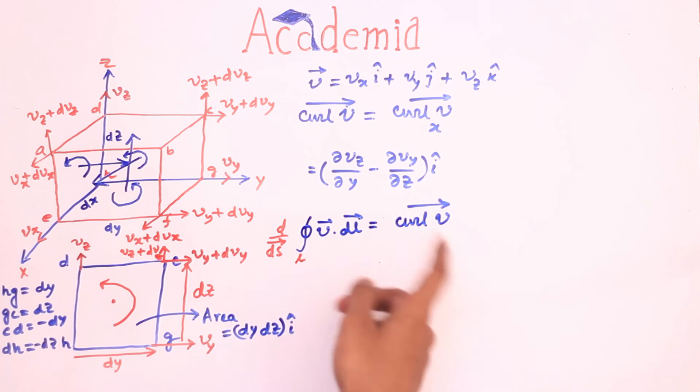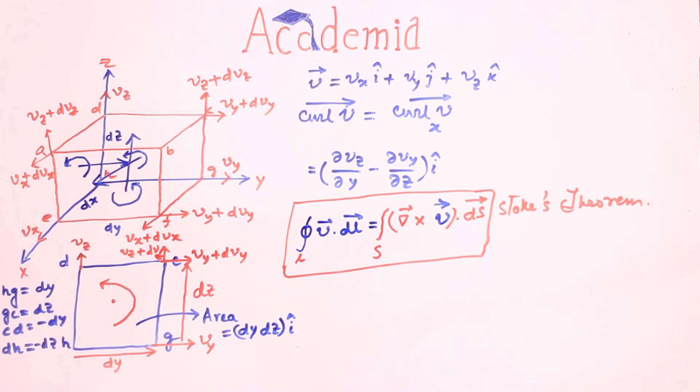So integrating both sides with respect to ds vector we have this. This is the mathematical form of Stokes theorem.